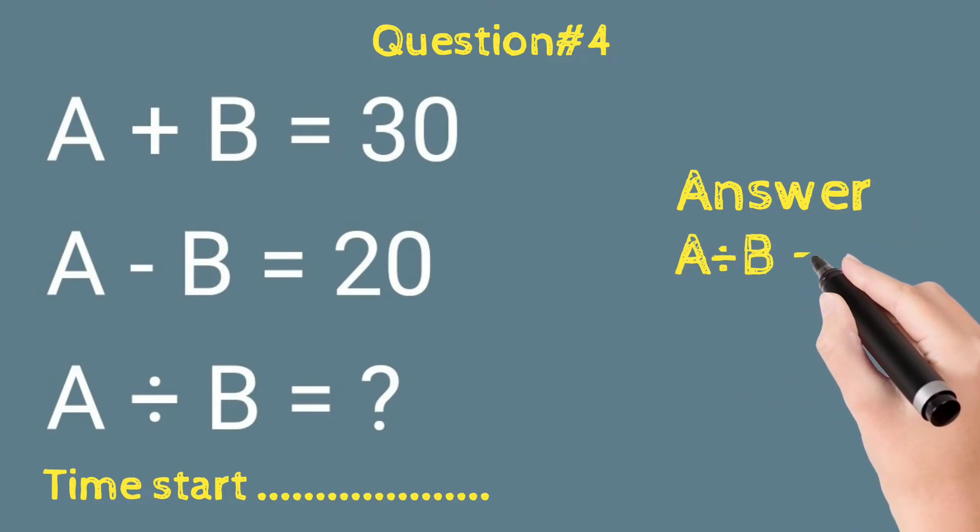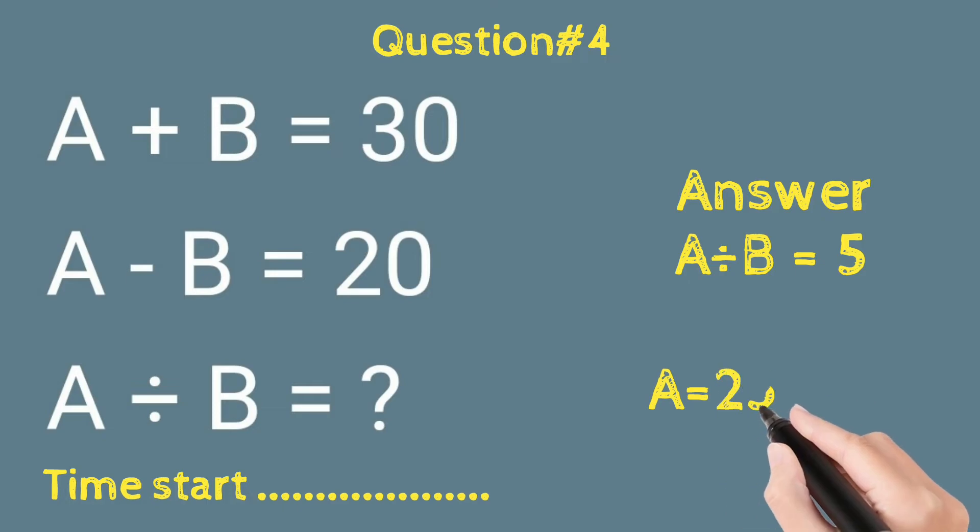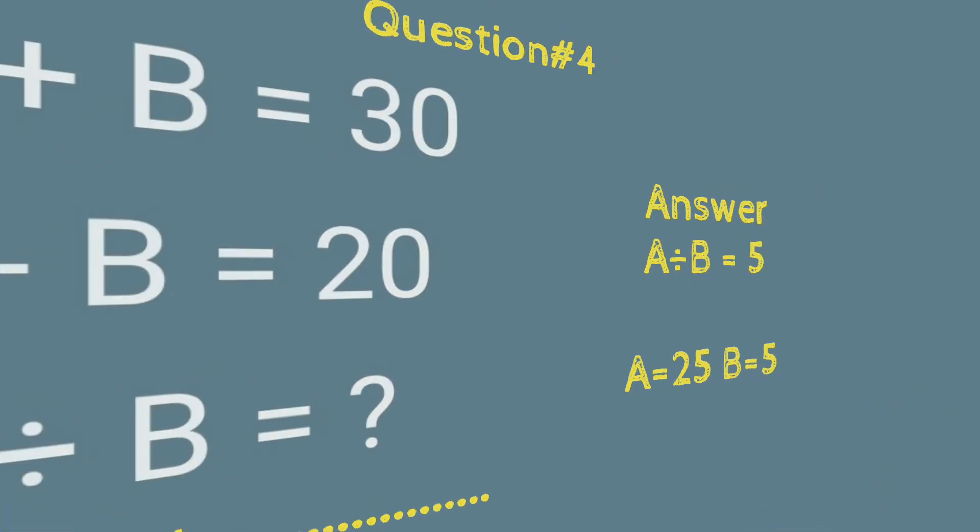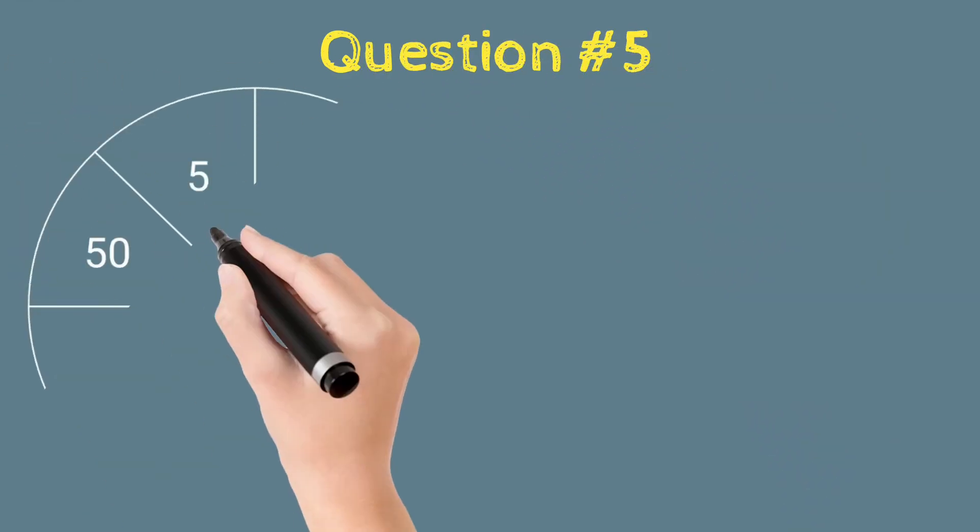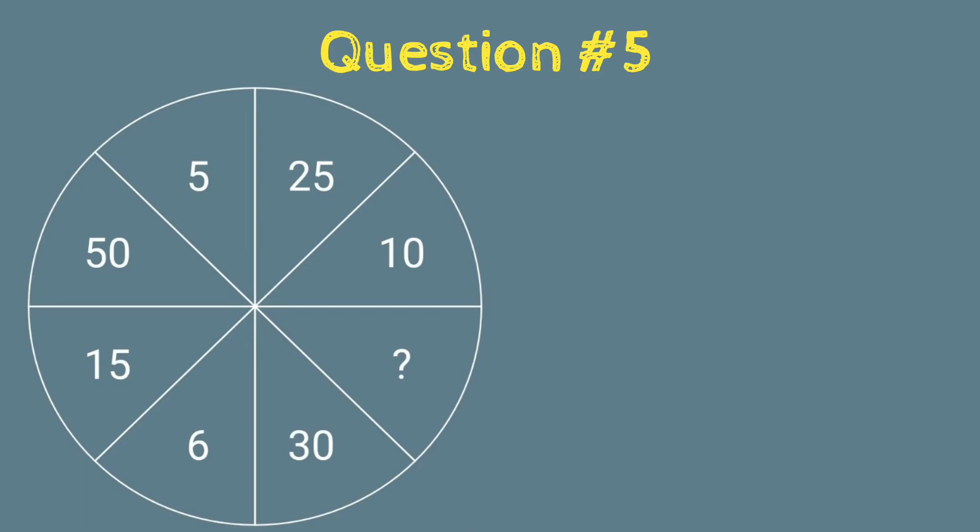Because A is equal to 25 and B is equal to 5. And Question 5, the last question: this is the figure in the circle and your time starts. What will be the answer in the question mark? Guys, please